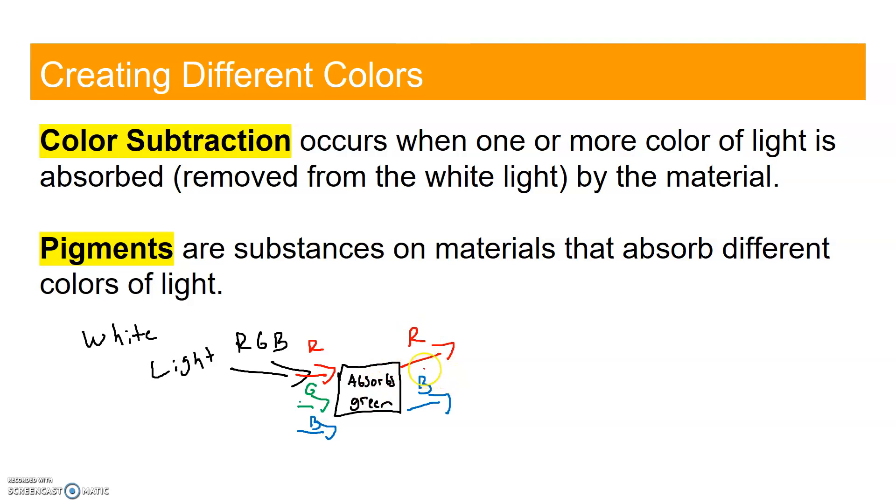Your eyes cannot see red and blue light separately. If two colors are coming to your eyes, your eyes can't see them as different colors. So your eyes combine them. We know that red and blue add up to make magenta. Red plus blue is magenta.